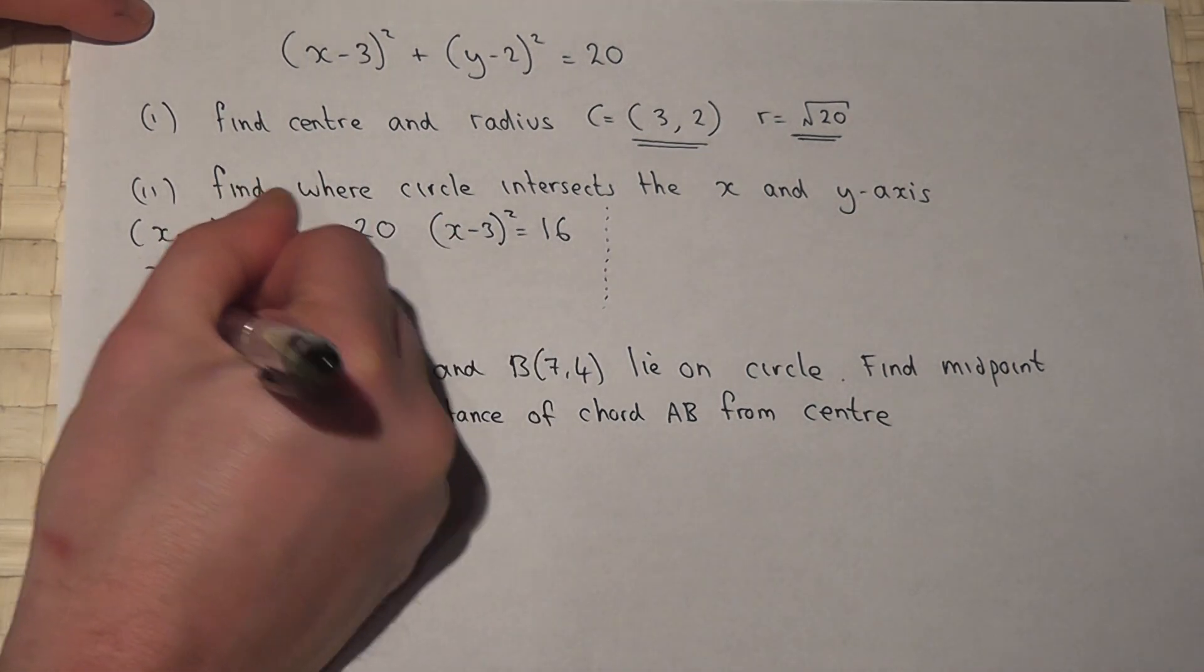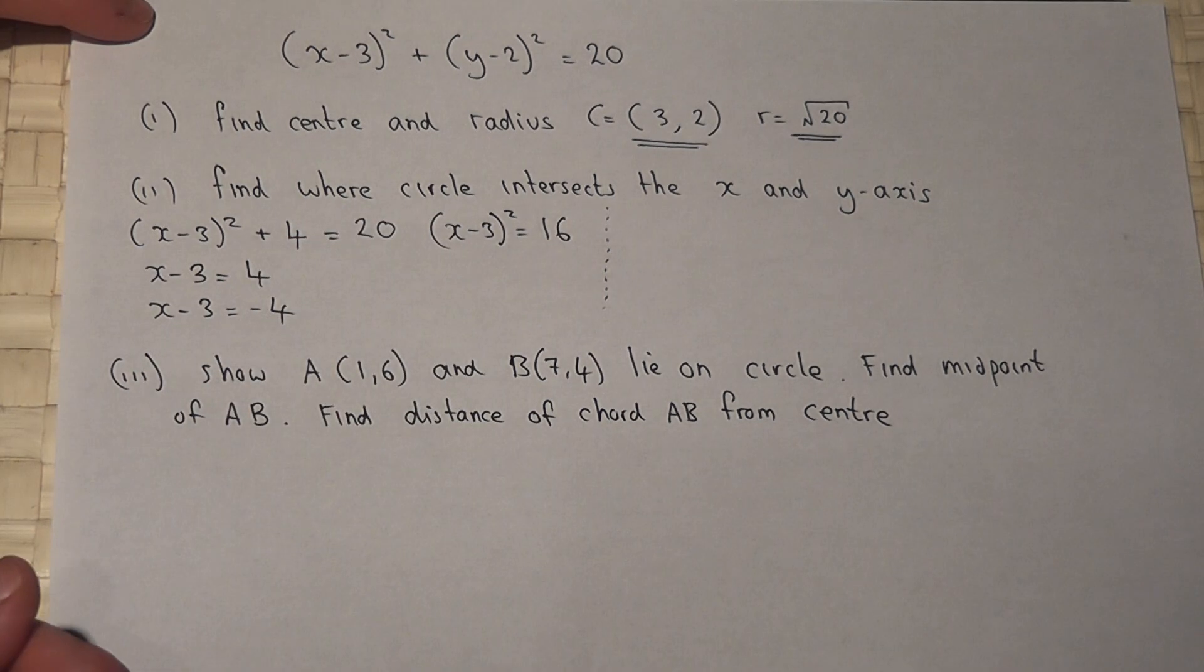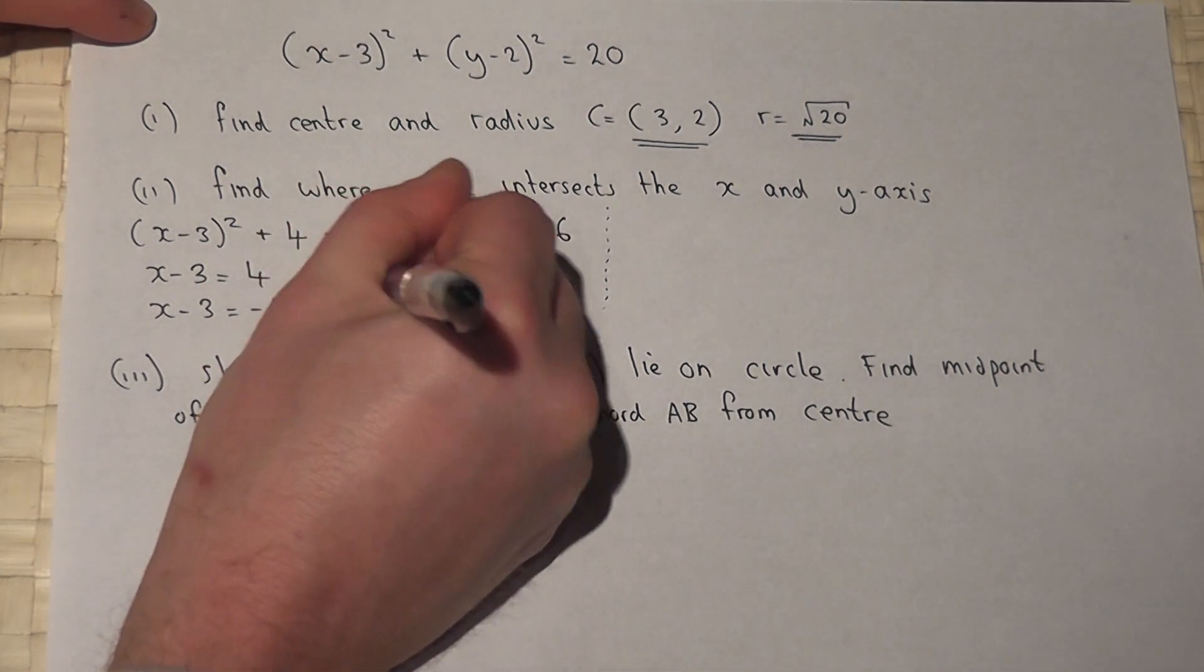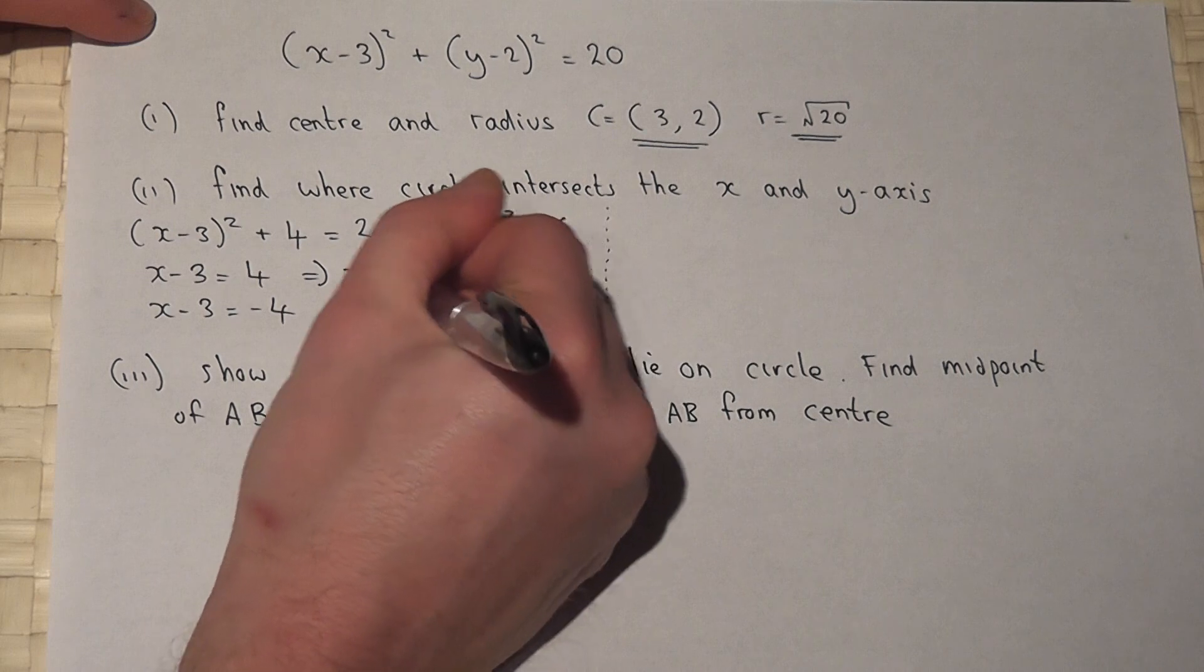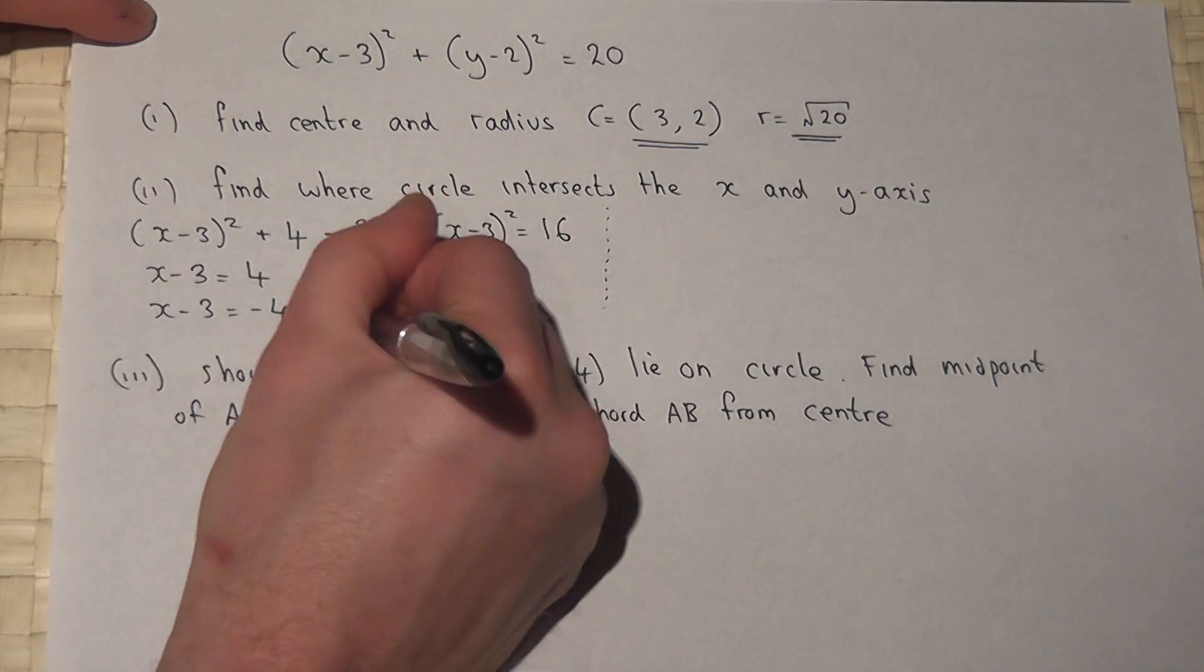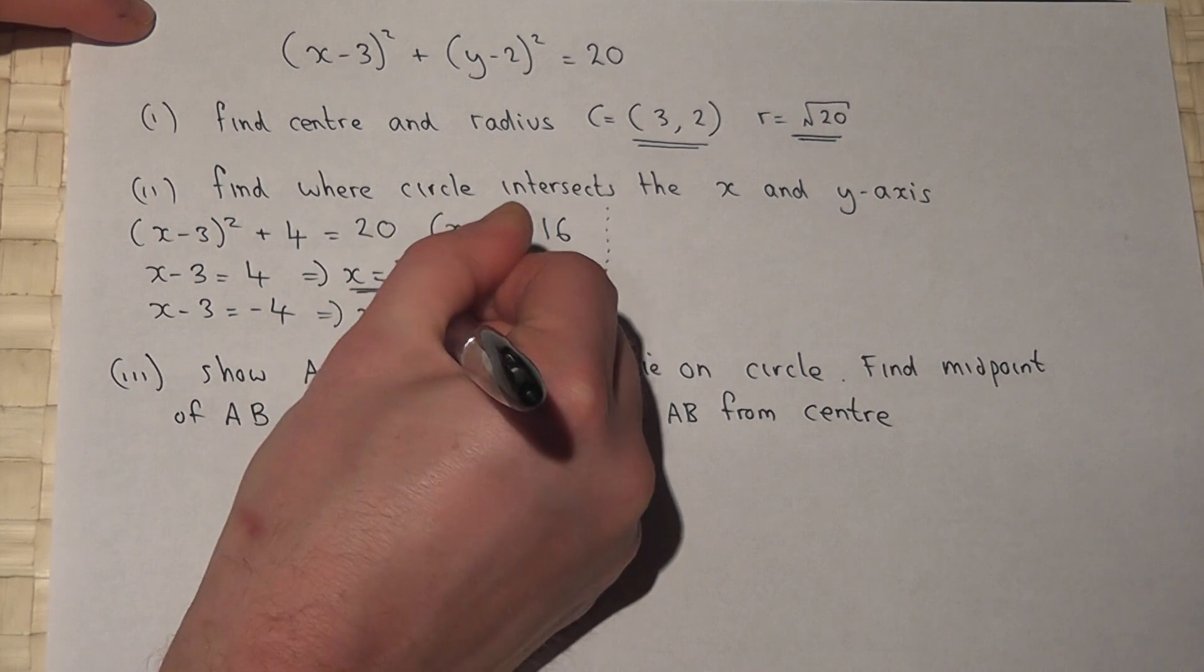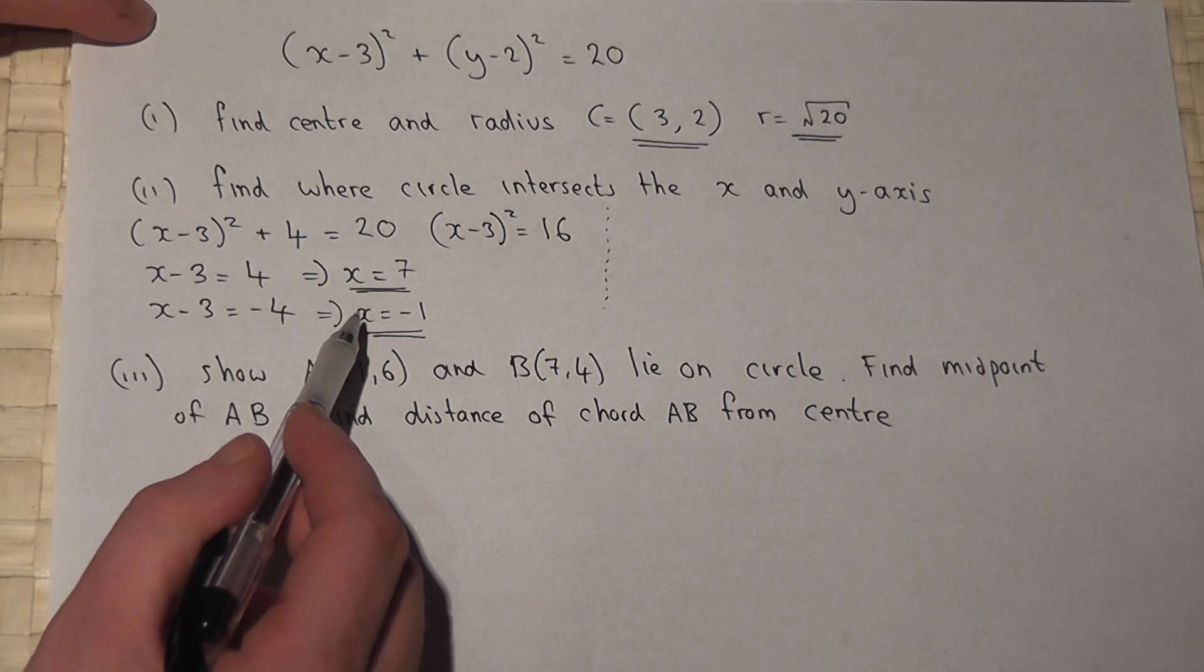Or x-3 equals -4. So the circle intersects the x-axis when either x equals 4+3, which is 7, or -4+3, which is x equals -1. So these are the values where the circle intersects the x-axis.